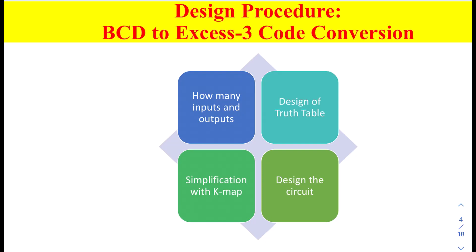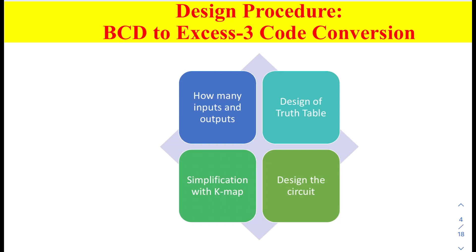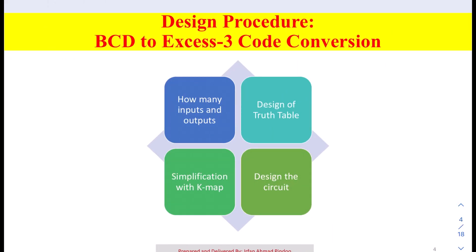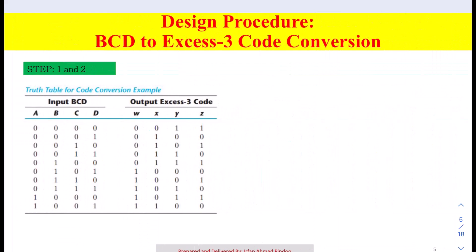Welcome back students. In this video we will be understanding the previous topic — design procedure — in more detail. Today we have brought one example where the question is to convert a BCD code into an XS3 code. We have summarized all four steps seen in our previous class, so let us go through that slide again. The four steps are: determine the number of inputs and outputs, create a truth table, derive equations from the table, and design the circuit.